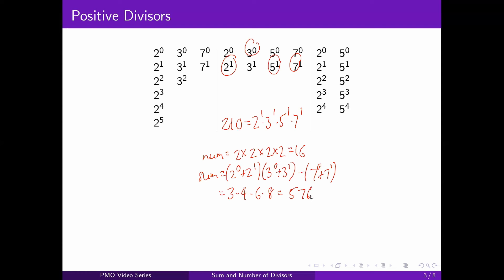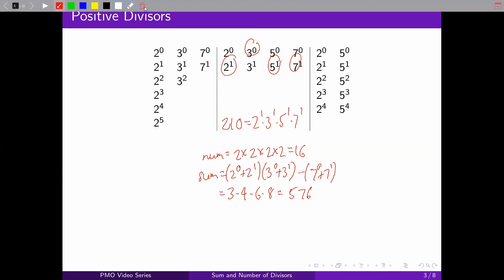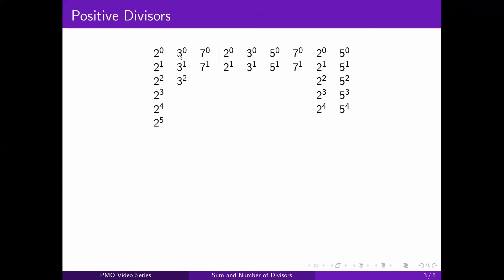So this is a very convenient formula because you can easily get the number and the sum of divisors. And finally, for the last number, you can try it on your own — this one is for 10,000.